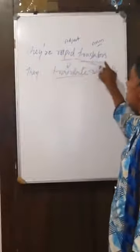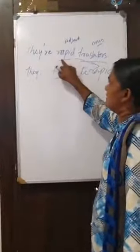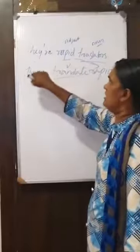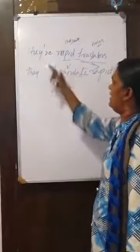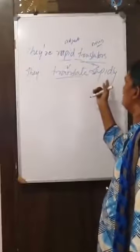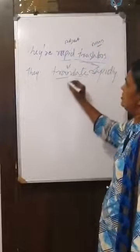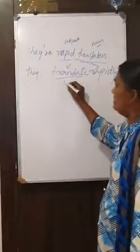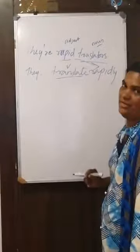Listen very carefully. They are rapid translators. Translators is a noun and rapid is an adjective. They is a pronoun, and the being verb confirms it like this: they translate rapidly. Translator is a noun — change it to translate, which is a verb. And your adjective rapid goes to the adverb rapidly.